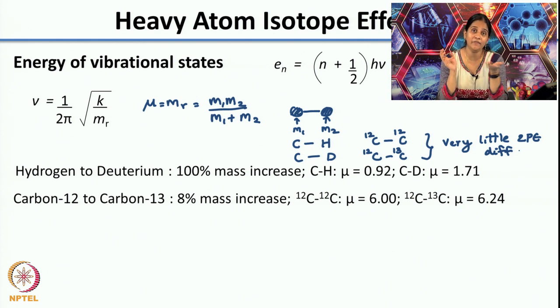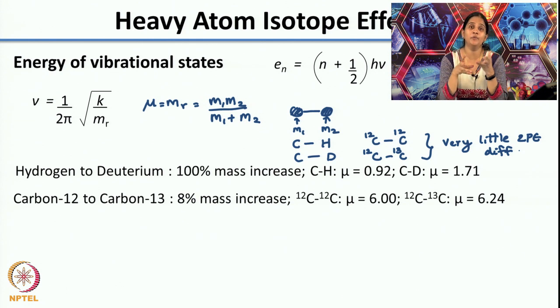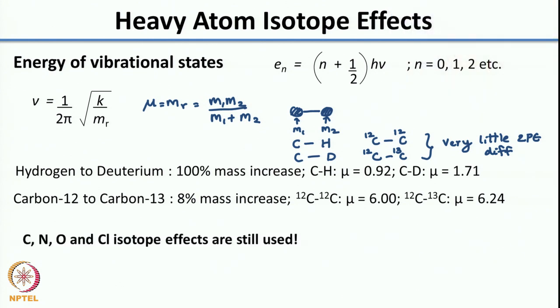That is why the kinetic isotope effect values when you do replacement with heavy atoms are much smaller than what you see for hydrogen and deuterium. We have seen KH/KD values close to 7. But that is not what you see for heavy atoms. Still, people study isotope effects for carbon, nitrogen, oxygen, chlorine, and other elements. The second question is: if the difference in kinetics is so small, how do you actually measure it?